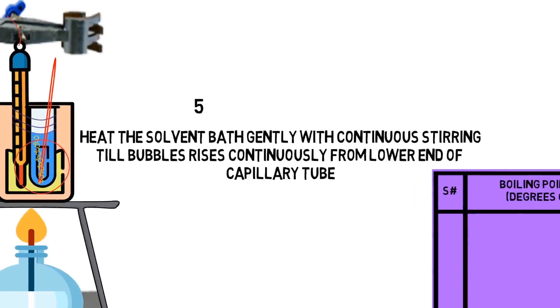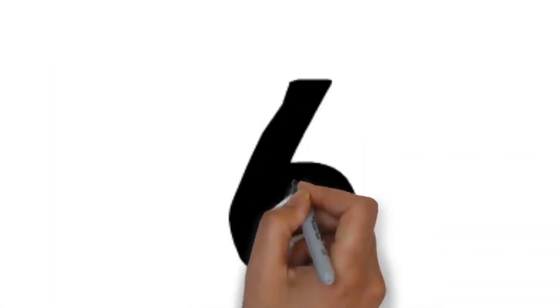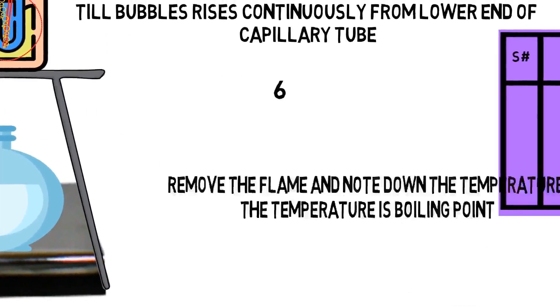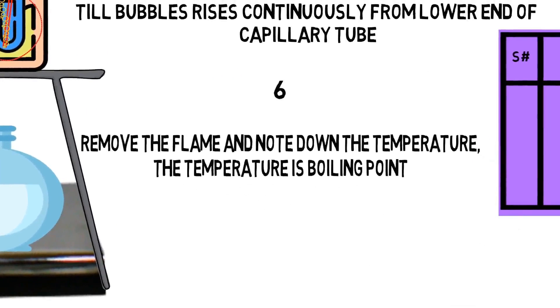Heat solvent bath gently with continuous stirring such that bubbles rise continuously from the lower end of capillary tube. Remove the flame and note down the temperature. The temperature is boiling point of liquid.